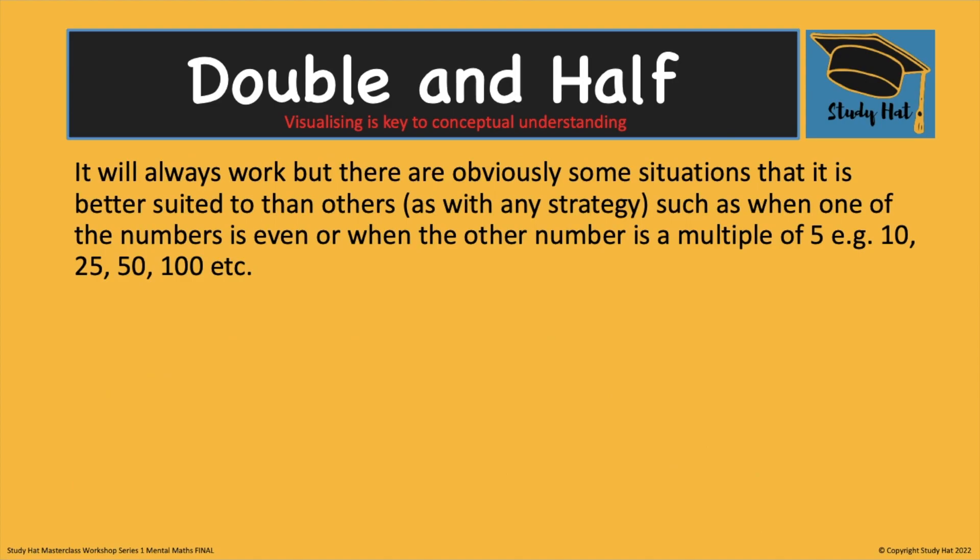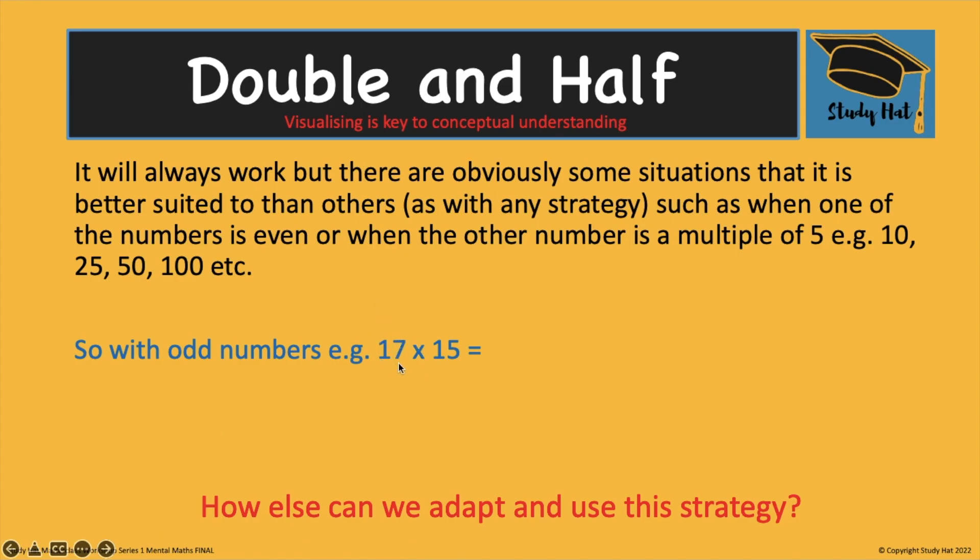It will always work. That's what's key to remember but there are obviously some situations that is better suited to others. Multiples of 5 like I said in the rules before 10, 25, 50, 100 and so on are easier to work with than for example odd numbers. Now just because it's an odd number here doesn't mean it doesn't work. It does work. 17 divided by 2 is 8.5. 15 times 2 is 30. I've halved. I've doubled but this is no easier to work out than 17 times 15. I'm not left with an easier equation so make sure you choose it for the right reason and that it is an effective strategy.